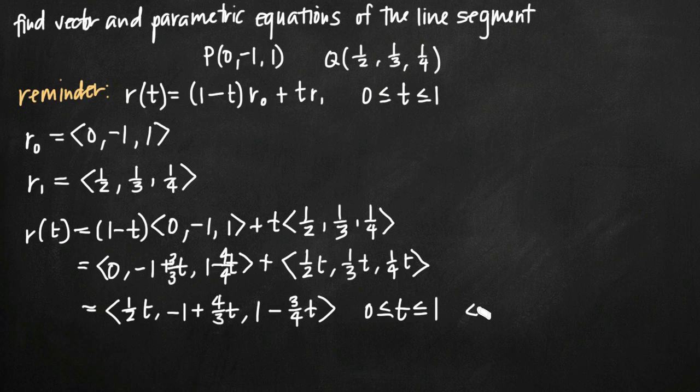Now remember we were asked to find vector and parametric equations of the line segment that joined these two coordinate points together. Well, this answer here is the vector equation that joins those two points. All we need are the parametric equations joining these two points together. So this is going to be the vector equation. Now we need parametric equations.